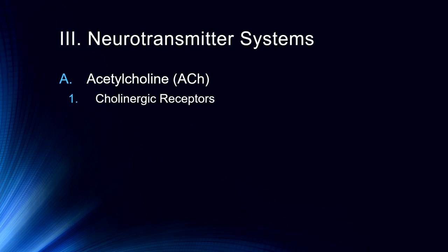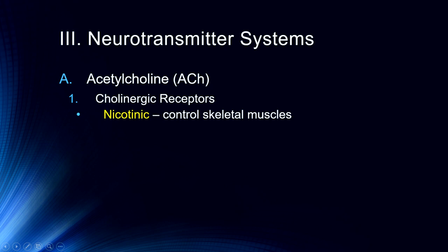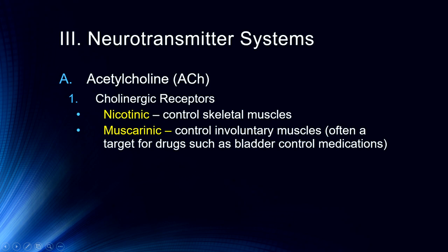Acetylcholine is an important neurotransmitter. It is one of the earliest that was discovered because it is so involved in the peripheral nervous system — both the somatosensory nervous system and the autonomic nervous system. The nicotinic type of acetylcholine receptors control our skeletal muscles but are also involved in memory and some other functions, as are the muscarinic receptors. However, muscarinic receptors do not control skeletal muscles — they control our involuntary muscles. So these are often a target for drugs such as bladder control medications.